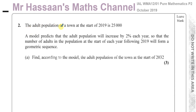The adult population of a town at the start of 2019 is 25,000. A model predicts that the adult population will increase by 2% each year, so that the number of adults at the start of each year following 2019 will form a geometric sequence. Find, according to the model, the adult population of the town at the start of 2032.